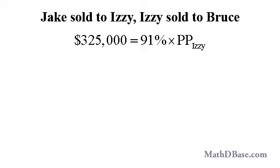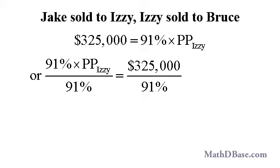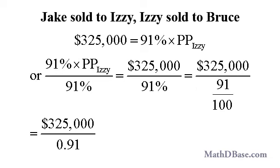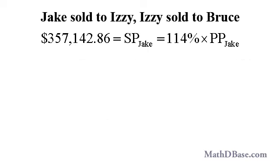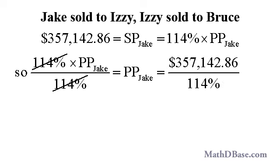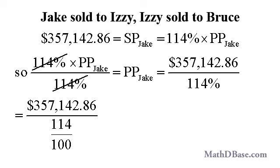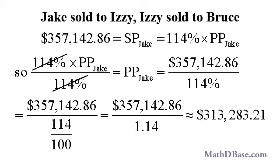Jake sold his house to Izzy at a gain of 14%. If Izzy had to sell the house to Bruce for $325,000 at a loss of 9%, what was Jake's purchase price? $325,000 represents 91%, 100% minus 9% of Izzy's purchase price. So Izzy purchased the house for $325,000 over 91%, which is equal to $325,000 over 0.91 or $357,142.86 to the nearest penny. $357,142.86 also represents Jake's selling price, or 114%, 100% of which represents Jake's original purchase price plus his 14% gain on the sale. So he bought the house for $357,142.86 divided by 114%, which is equal to $357,142.86 divided by 1.14. So Jake paid $313,283.21 for the house.